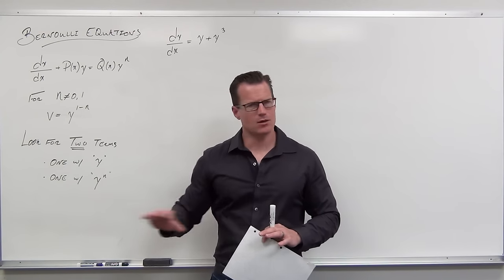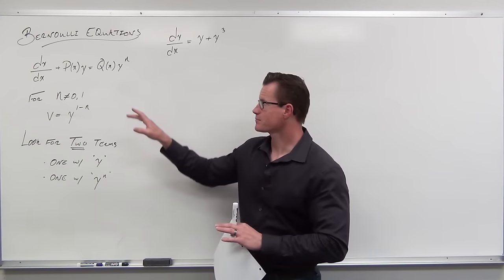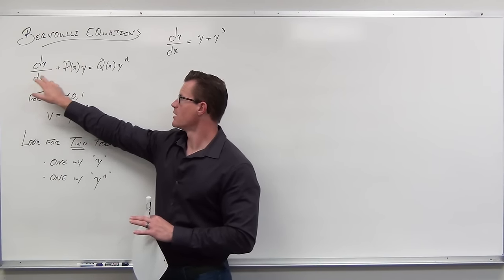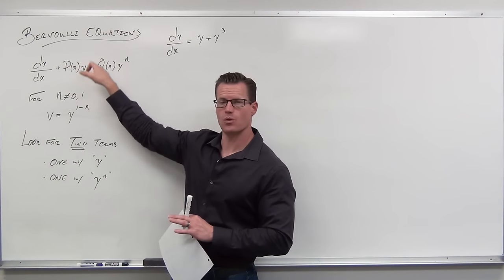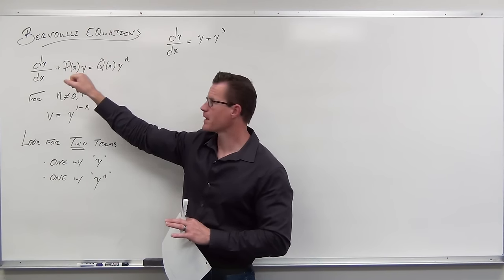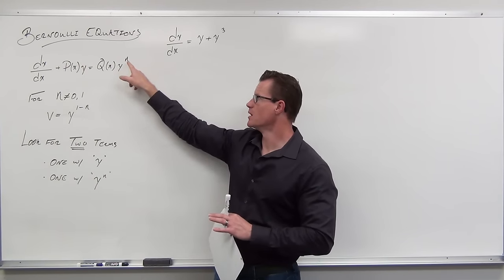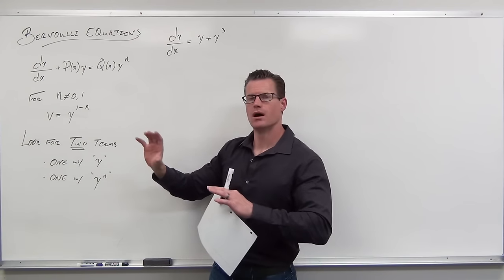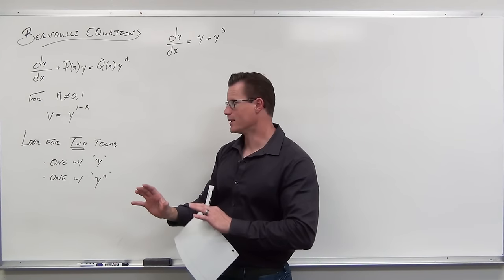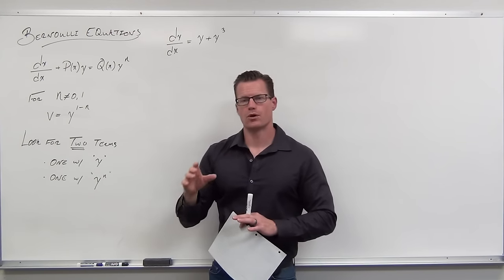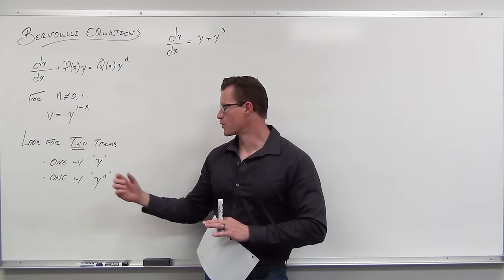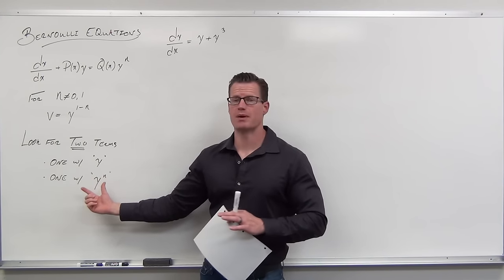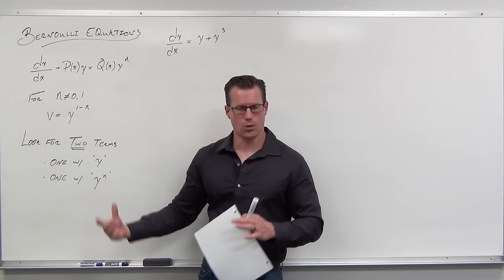But if n is any other power besides zero or one, you have something that's called a Bernoulli equation. We're looking for one term that has y in it and another term that has y to a power that's not zero or one.